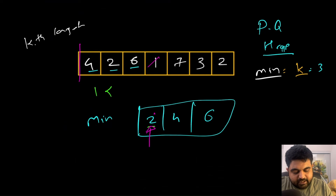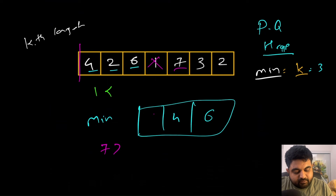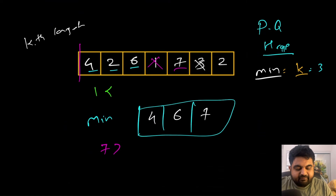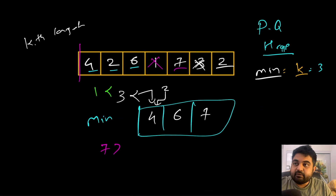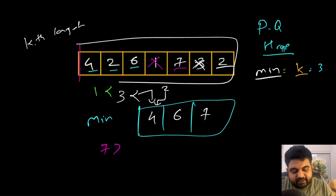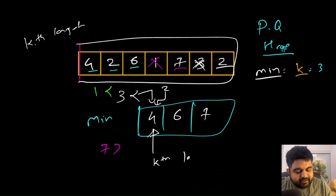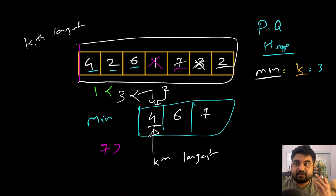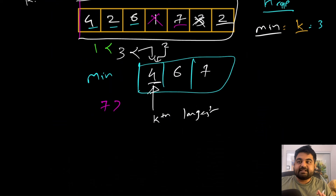Value 7 is greater than the current minimum 2, so we remove 2 and insert 7. After self-adjusting, the heap becomes [4, 6, 7]. Next, value 3 is smaller than 4, so we skip it. Value 2 is also smaller than 4, so we skip it as well. After iterating over the entire array, the very first element in the min heap is the kth largest element — which is 4, the third largest element in our array.